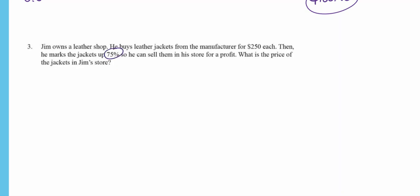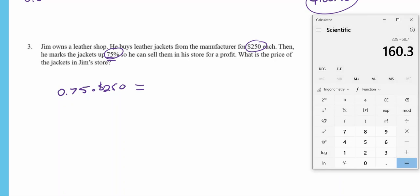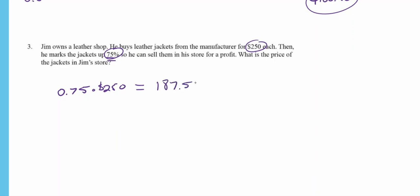Step one: find 75% of $250. We write 75% as the decimal 0.75, then multiply: 0.75 times $250 equals $187.50. That $187.50 is the dollar value of the markup.